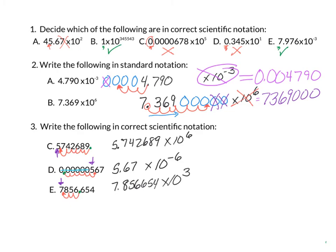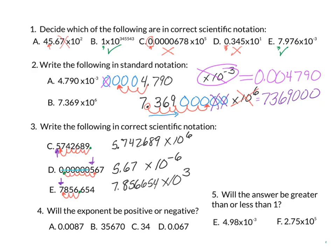How did you do? If you got some wrong, you might want to go back and try again or look up scientific notation on the internet. I've decided to add two more questions. Number 4: will the exponent be positive or negative? In letter A, the exponent will be negative because the number is less than 1. Letter B will be a positive exponent because it's greater than 1. Letter C will also be positive. And letter D will be negative because the number is less than 1.